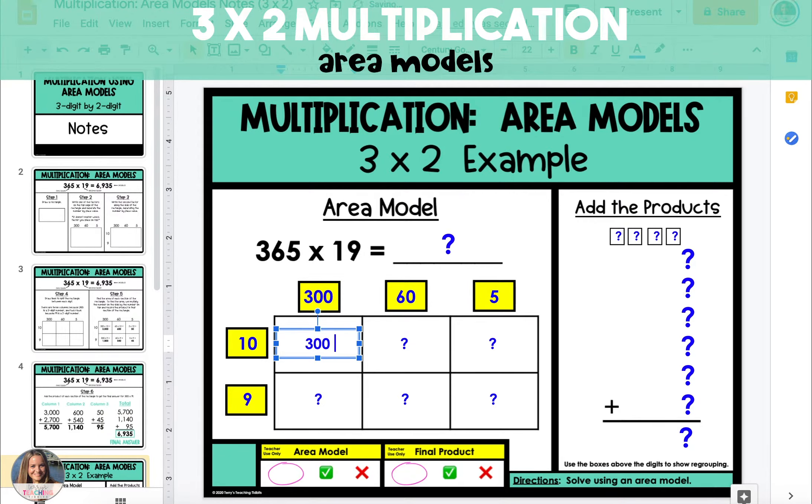To find the area of the top left box we multiply 300 times 10 which is 3,000. The top middle box is 60 times 10 which is 600, and the top right box is 5 times 10 which equals 50.